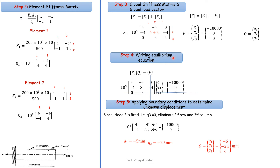To determine unknown displacements, apply the boundary conditions. We use the elimination approach. Node 3 is fixed, so q3 = 0. Eliminate the third row and third column from the global stiffness matrix. The reduced system becomes: 10³ × [4, -4; -4, 8] × [q1; q2] = [-10,000; 0].